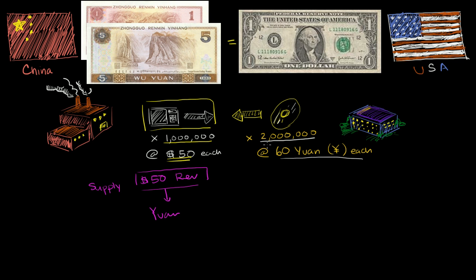Now, the US manufacturer is going to sell 2 million units at 60 yuan each. So that's going to be 120 million yuan of revenue. And he is going to want to convert this into dollars at the prevailing exchange rate right then, which is 6 yuan per dollar. So he is going to want to convert this—you divide this by 6—he's going to want to convert that into $20 million.